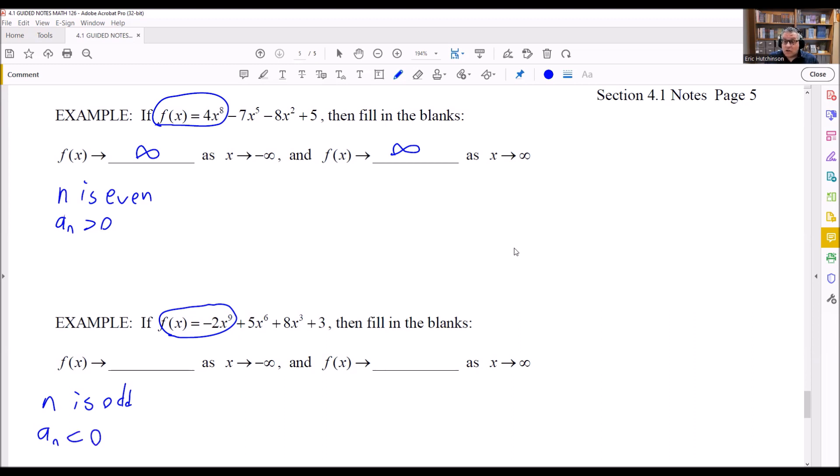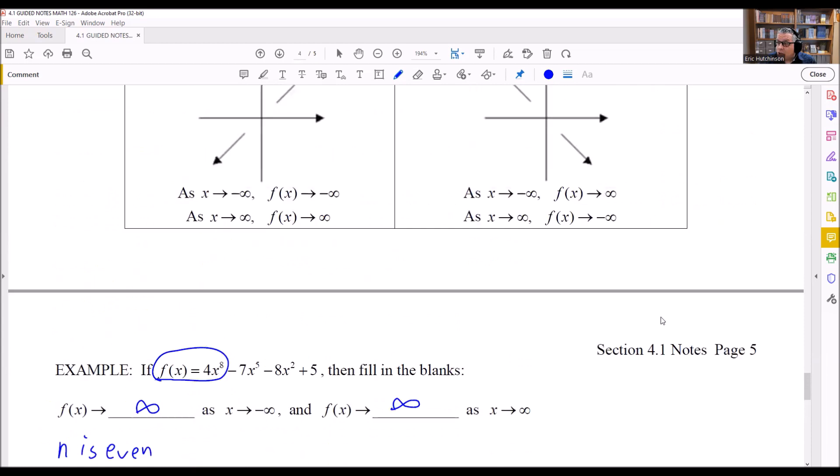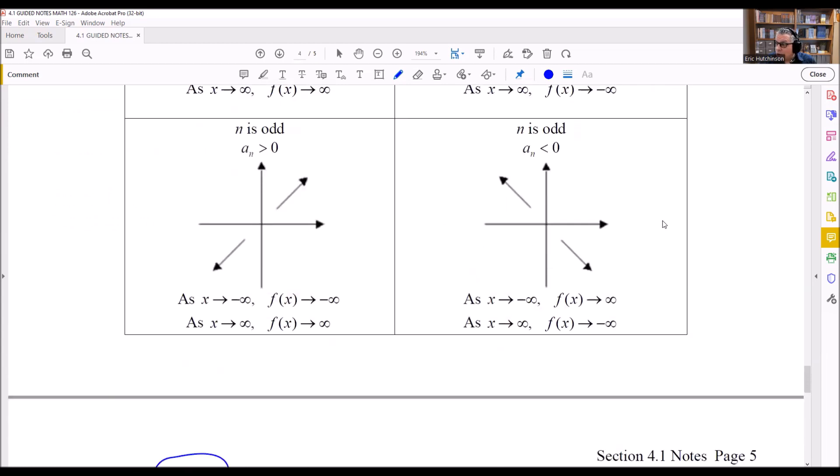Now I know what end behavior model to use. n is odd and a_n < 0 because I have a minus 2 there. That means I'm going to look at the very last one, this one right here.